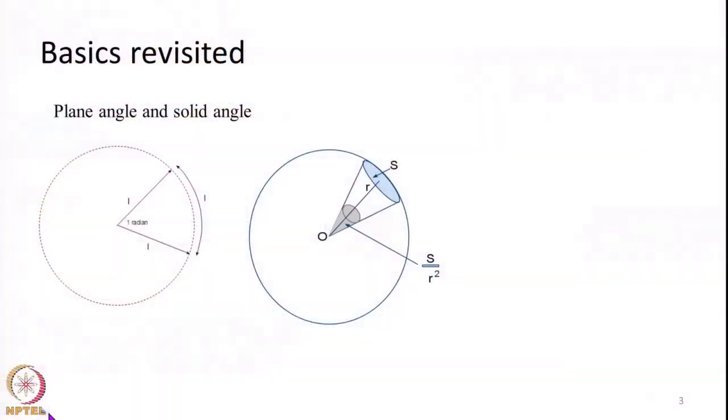In order to quantify the amount of energy coming out of an object, we need to know the various principles and terms associated with radiometry. Radiometry essentially is the quantitative measurement of EMR in various wavelengths. Before going into the concepts of radiometry, we will first revisit some basics that we learnt in high school mathematics.